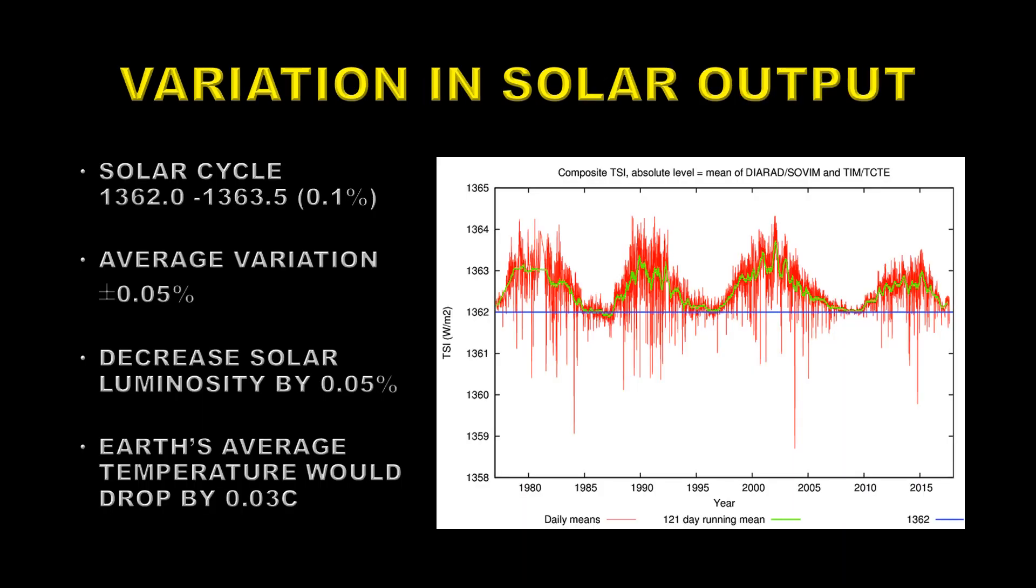Well first of all we should take a look at how much the solar output varies and that's the variation of the total solar irradiance shown here on the right. The red is the daily values, the green is a long-term average value. The average variation is 0.1 percent over a solar cycle, over a period of 11 years. That means that the average deviation from the average level of solar output is 0.05 percent.